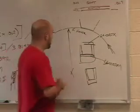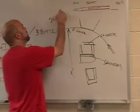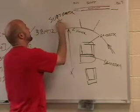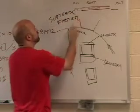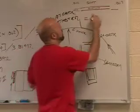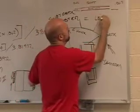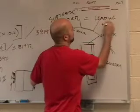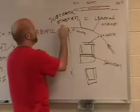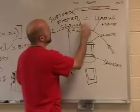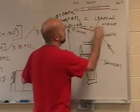So, synopsis: substrate faster than plate equals leading halo. Substrate slower equals trailing halo. So that's it. Nobody else will have told you that.